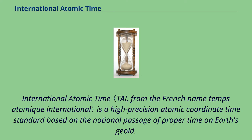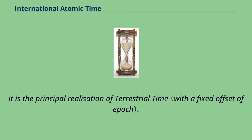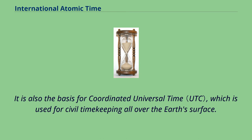International Atomic Time is a high-precision atomic coordinate time standard based on the notional passage of proper time on Earth's geoid. It is a continuous scale of time, without leap seconds. It is the principal realization of terrestrial time. It is also the basis for Coordinated Universal Time, which is used for civil timekeeping all over Earth's surface.